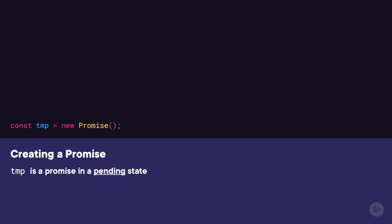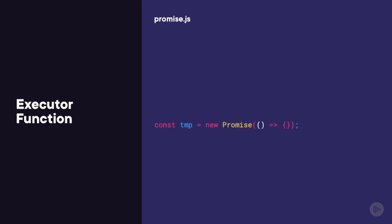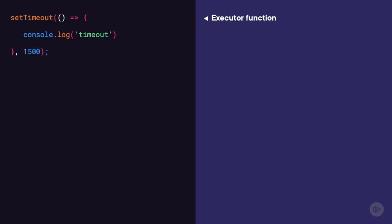The first thing to know is that a promise takes a function as the one and only parameter to its constructor. This function is called the executor function, and its inside can be as simple or as complex as you want. For demonstration purposes, I'm going to use setTimeout inside that function. If you're not familiar with setTimeout, it takes two parameters: the first is a function which gets executed after the second parameter — a timeout. After 1500 milliseconds, the word 'timeout' would be logged to the console. Remember that promises are eager — if we ran this code now, setTimeout would start executing immediately. However, this would still not change the state of the promise.